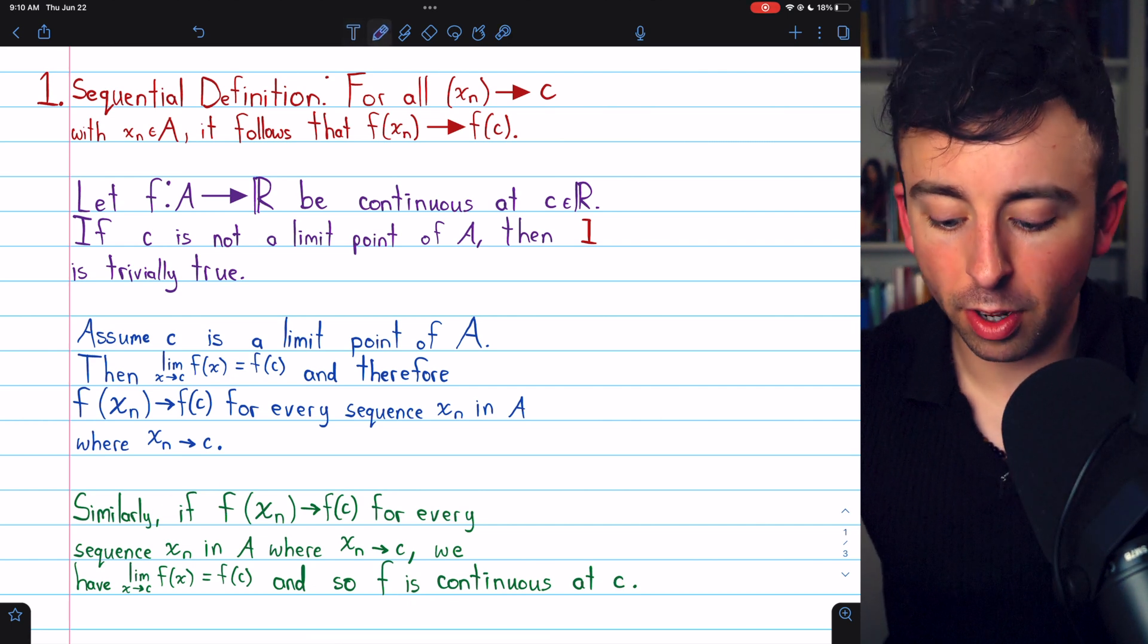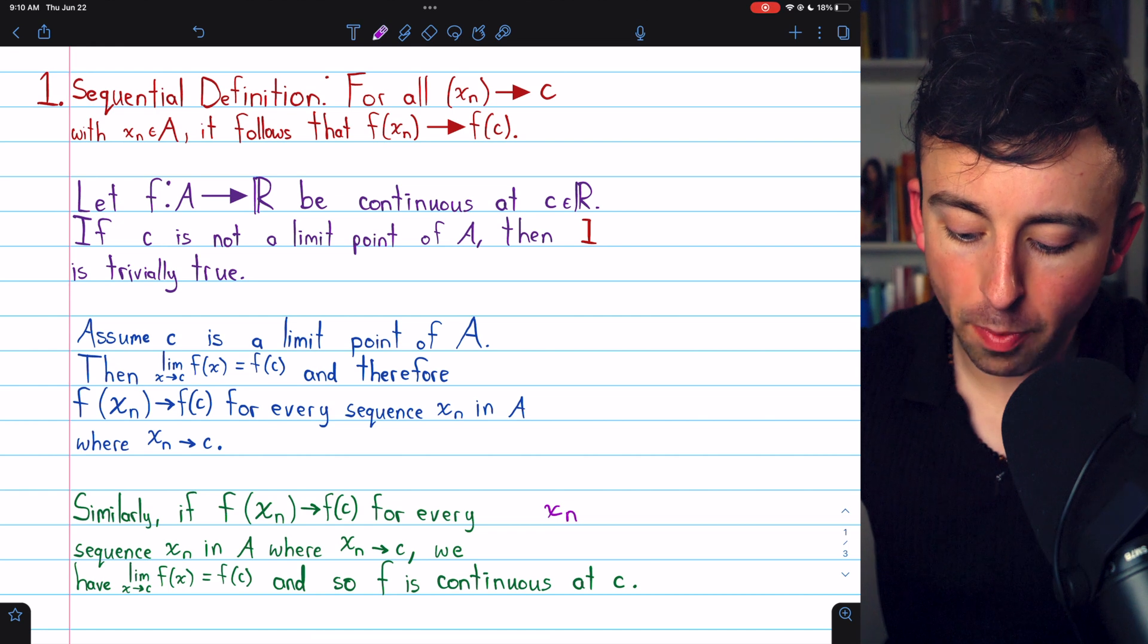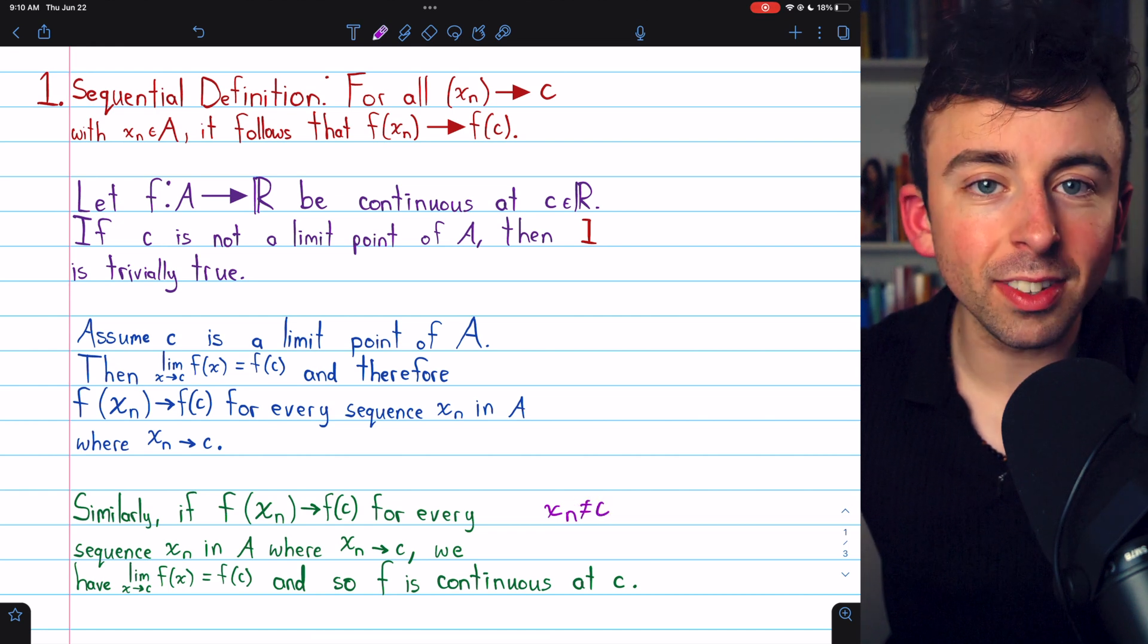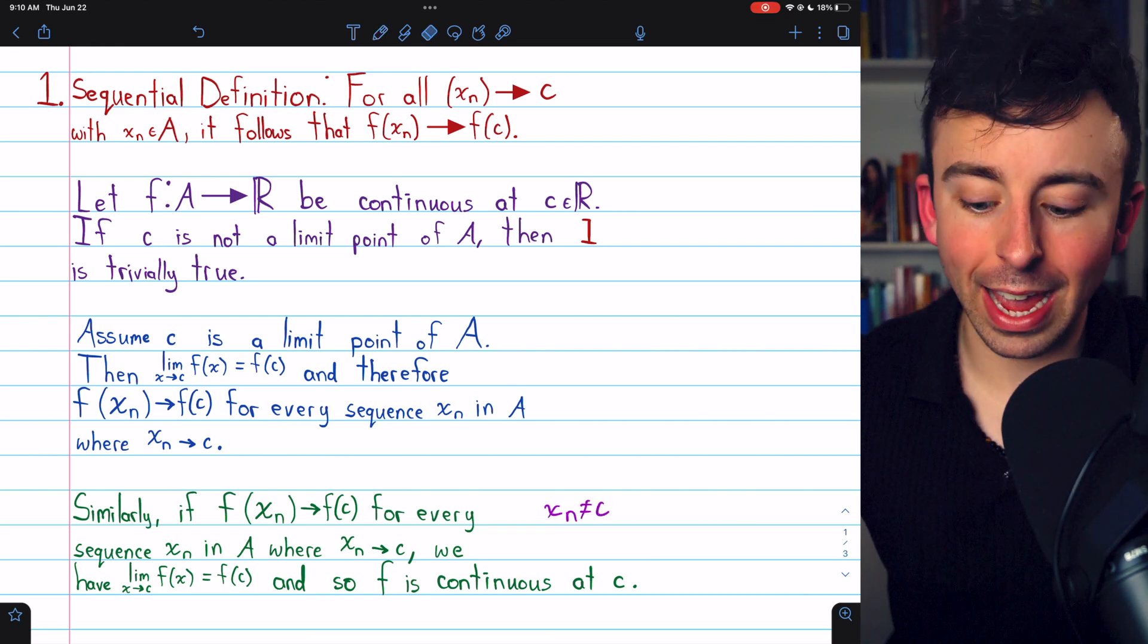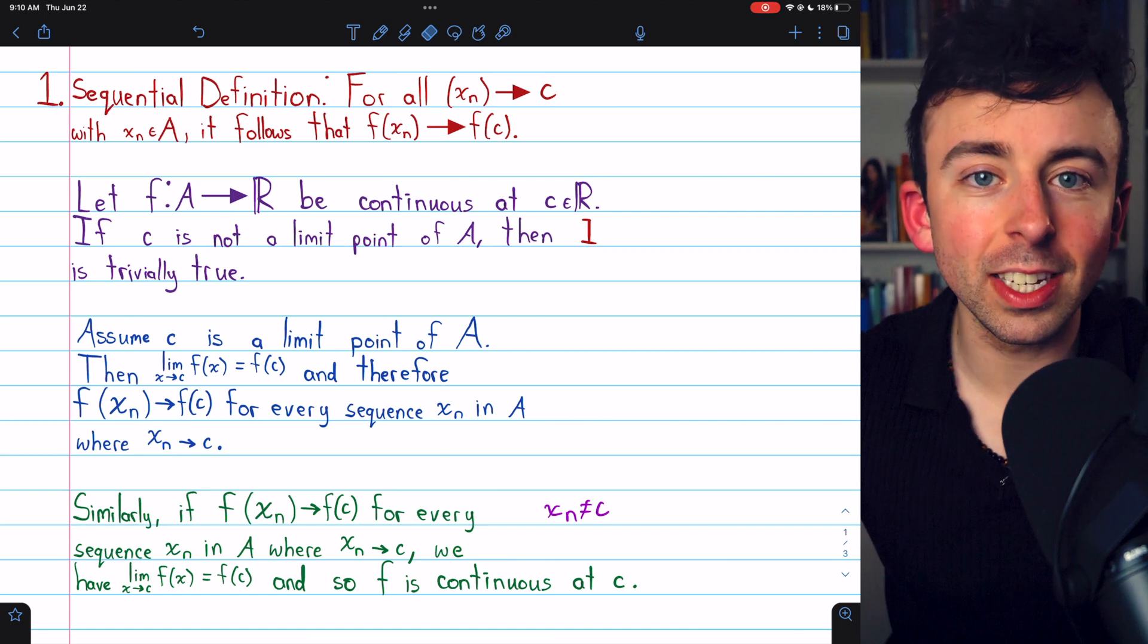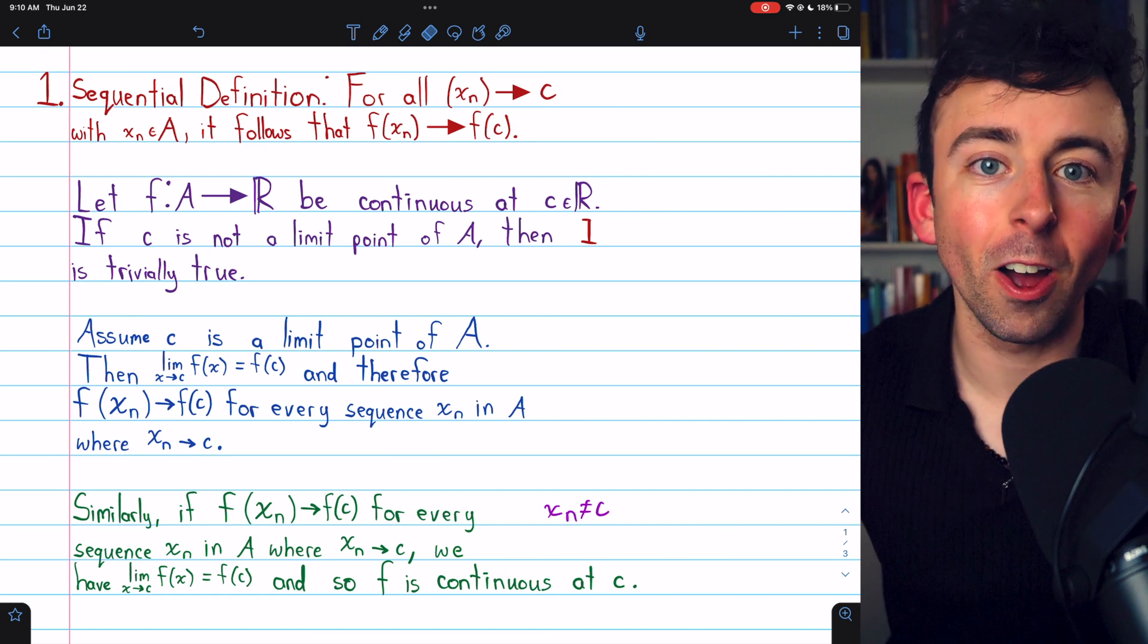Once more, I'll mention when we proved the sequence result, we were assuming that each term xn was not equal to c but if you go back to that proof and allow xn to equal c, the proof still works. It doesn't cause any issues.